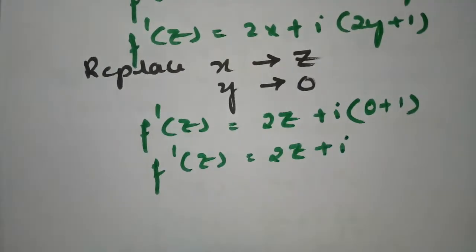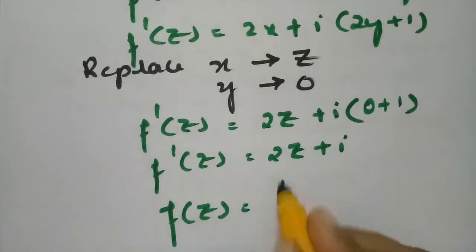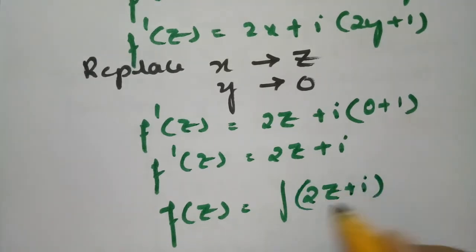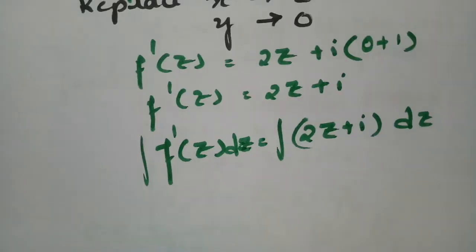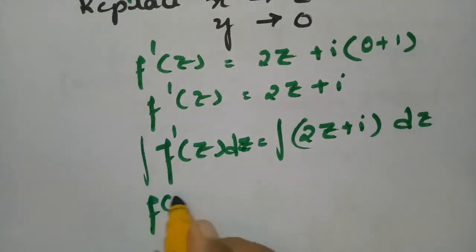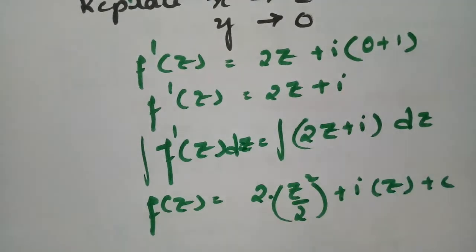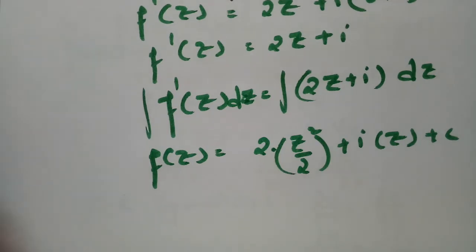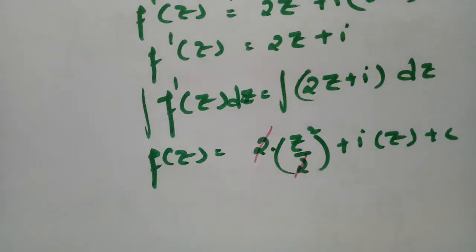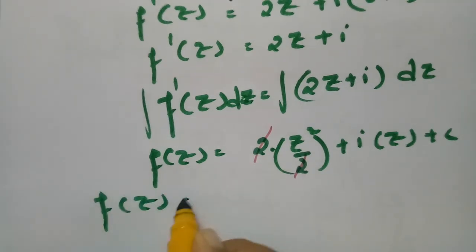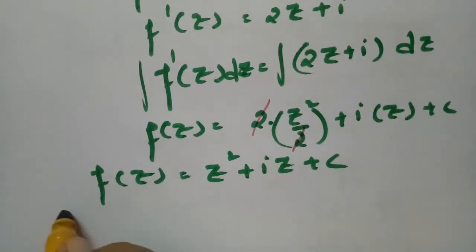Now integrating both sides: ∫f'(z)dz = ∫(2z + i)dz. The integration and derivative cancel on the left side, giving f(z) = 2·(z²/2) + iz + c, which simplifies to f(z) = z² + iz + c.